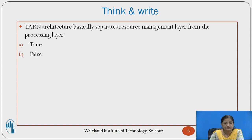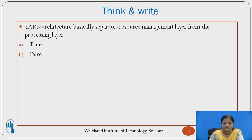Now, consider this question: does YARN architecture basically separate the resource management layer from the processing layer? To answer this, Hadoop came in two versions — Hadoop 1.0 followed by Hadoop 2.0. In Hadoop 1.0 there were only two components: MapReduce for distributed processing and HDFS for distributed storage. MapReduce was allocated the task of both resource management and distributed processing, so it was overburdened with both tasks.